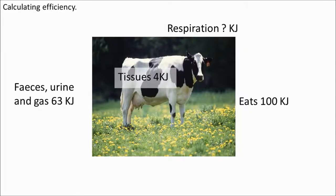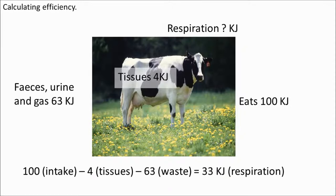Let's do an efficiency calculation. This cow eats 100 kilojoules — 100,000 joules — four of which are used to build up the tissues, and 63 kilojoules of which leave the cow as waste. So to work out how much energy is lost in respiration we do 100 minus 4 minus 63, and the remaining 33 kilojoules is used in respiration.